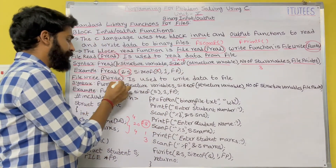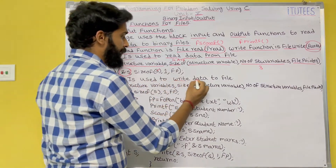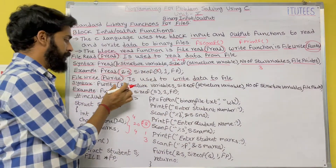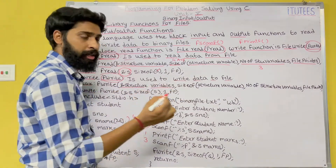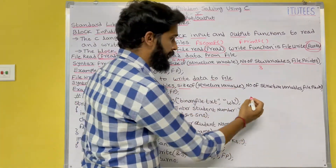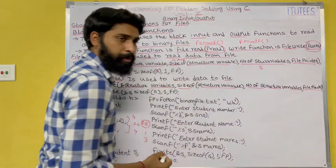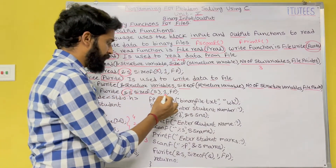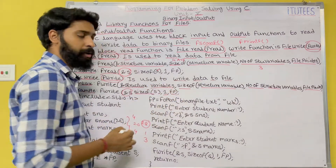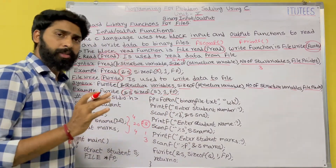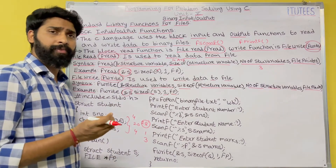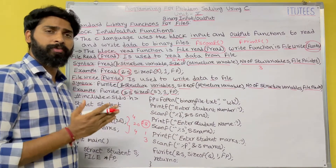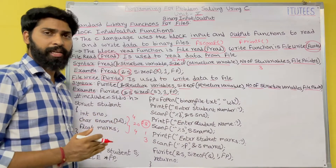The next function is fwrite, which is used to write data to a file. The syntax is similar to fread — it specifies the address of the structure variable, size of the structure variable, number of structure variables, and file pointer. For example: fwrite(&s, sizeof(s), 1, fp) — where the number of variables is 1 and the file pointer is fp. The fread function is used to read data from a binary file, and fwrite is used to write data onto binary files.